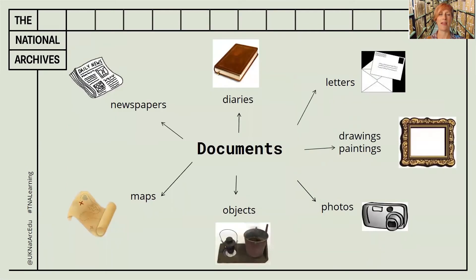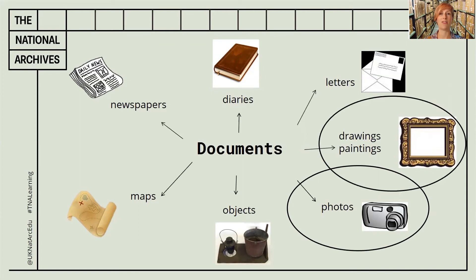Do you remember this diagram from the introductory video? It shows you some examples of the types of documents we have here at the National Archives. I've just shown you two different documents connected to the country we're going to visit — the first image was a photograph and the second was a drawing. Our mystery document is another type of document shown here. This time I'm going to let you have a really good look at it. I want you to focus on gathering lots of evidence about the features of this type of document — you will also find more clues to the country we are visiting today. Remember to gather lots of evidence and meet me back in part two.